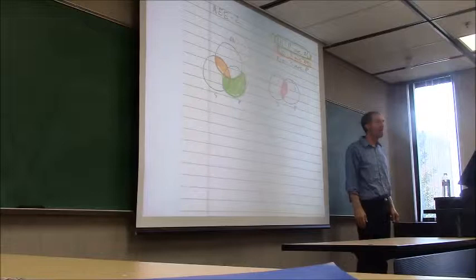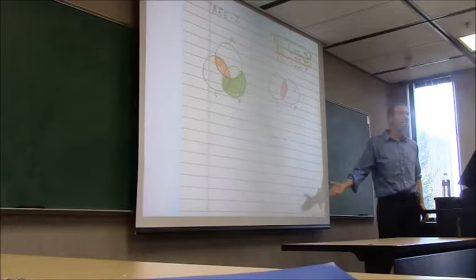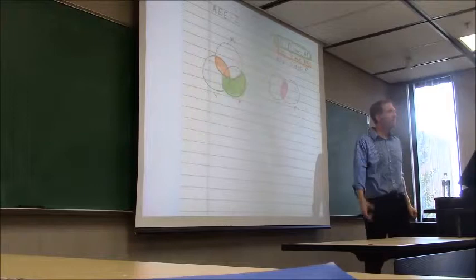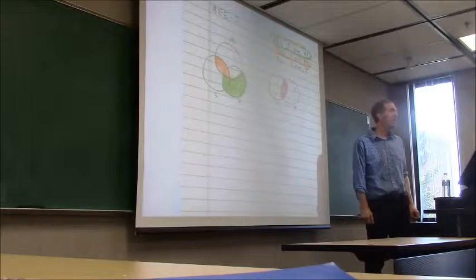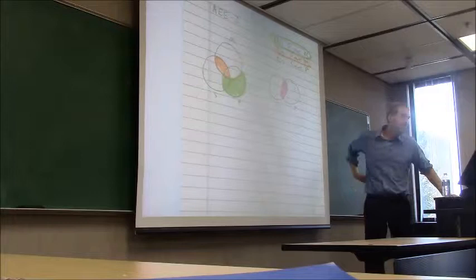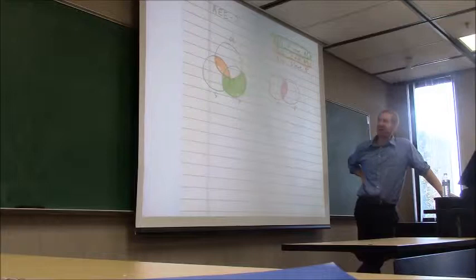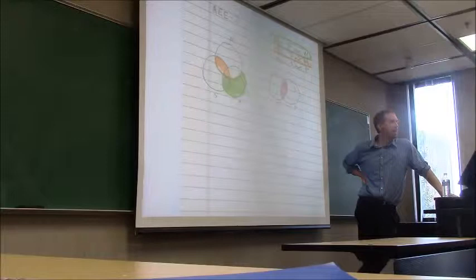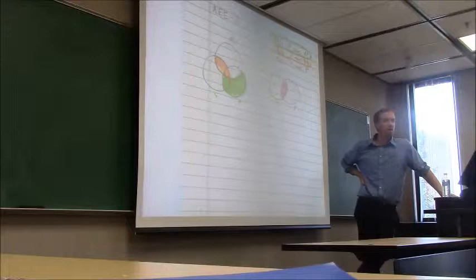We have finished the diagram, and the diagram tells us something — it's like tea leaves. If you know how to read it, there's important information there. It tells us whether or not this argument is valid. Let's remind ourselves of the most important concept: when is an argument valid? When the premises guarantee the conclusion.